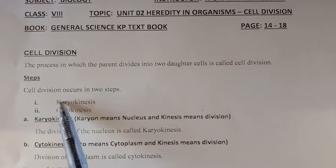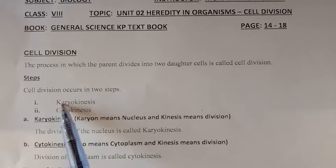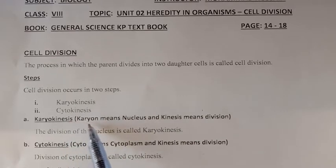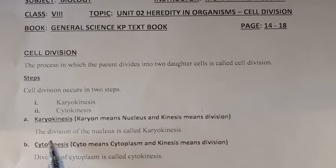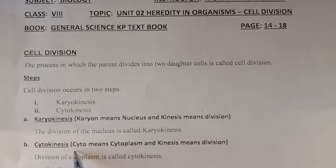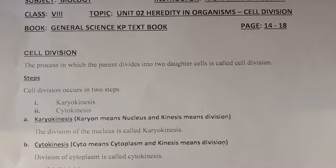There are two steps of cell division: karyokinesis and cytokinesis. 'Karyo' means nucleus and 'kinesis' means division, so karyokinesis is the division of the nucleus. 'Cyto' means cytoplasm, so the division of cytoplasm is called cytokinesis.